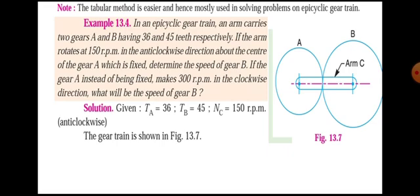Solution. First, the given data: Ta = 36, Tb = 45, and the speed of the arm Nc = 150 RPM. The arm rotates in the anti-clockwise direction, so the arm speed is plus 150 RPM.